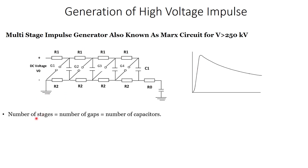This circuit contains a number of stages — it is a multi-stage impulse generator. The number of stages equals the number of gaps: you can see gaps G1, G2, G3, G4. For example, here we have four gaps, making this a four-stage Marx circuit. The number of stages also equals the number of capacitors, and this capacitor bank is connected to the load, which is our output.